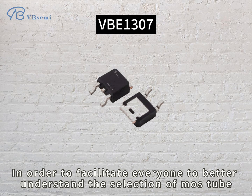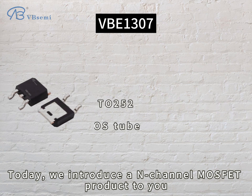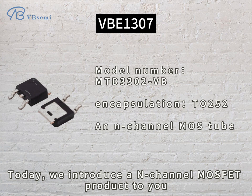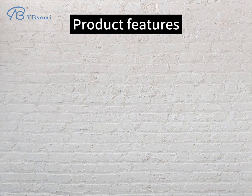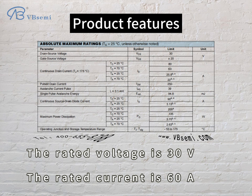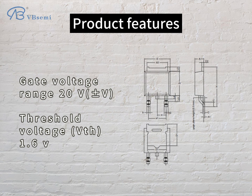In order to facilitate everyone to better understand the selection of MOSFETs, today we introduce an n-channel MOSFET product to you. Model number MTD3302VB. Product features: the rated voltage is 30V, the rated current is 60A, gate voltage range 20V, threshold voltage VTH 1.6V.